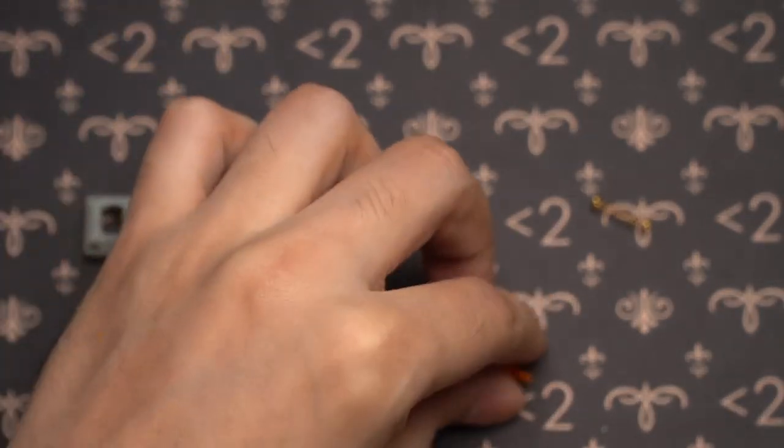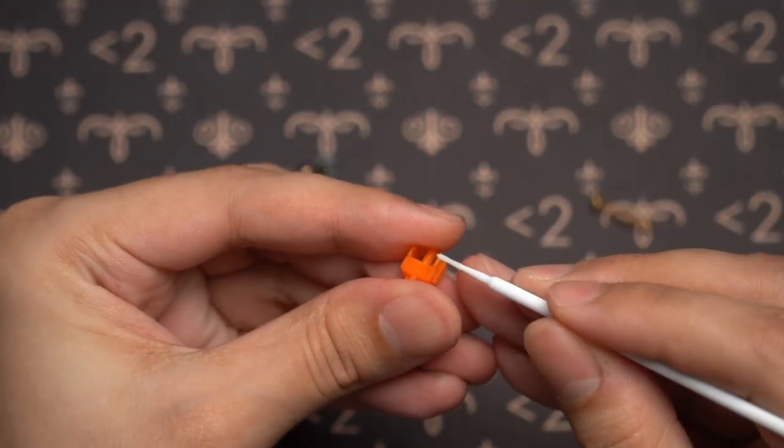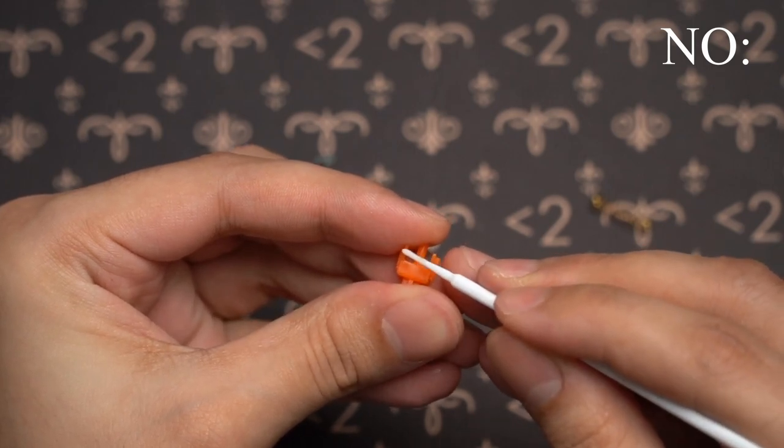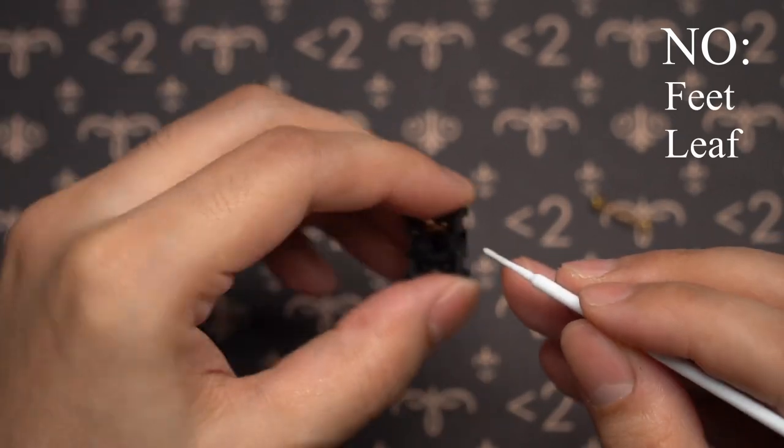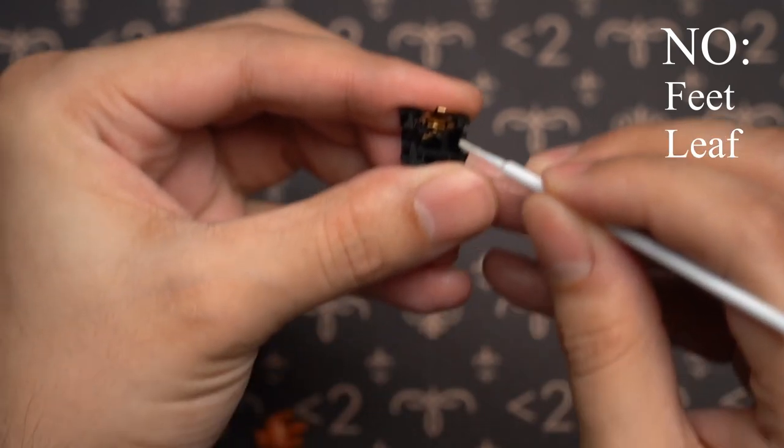And then the final portion being things you should never lube. And what you should never lube is the stem feet as well as the leaf on the housing bottom.